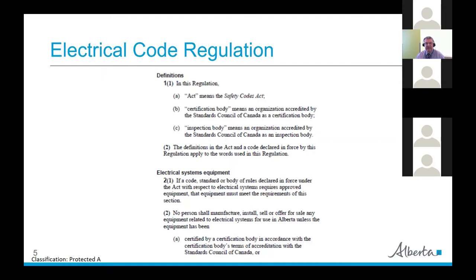Item two says no person shall manufacture, install, sell, or offer for sale. A lot of RSCOs will think of rule 2-024 in the code with regards to approval of electrical equipment. This goes above and beyond that, and that's in the regulation. Anything in the regulation overrides a code. It doesn't just talk about install — Part 1 is an installation code — it also talks about manufacturing, selling, or offering for sale.